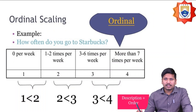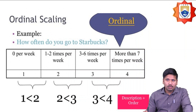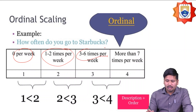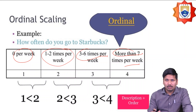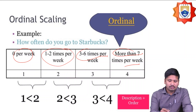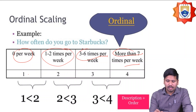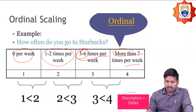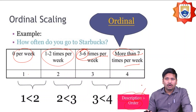Ordinal scaling example: how often do you go to Starbucks per week? Categories might be: zero times, one to two times per week, three to six times per week, and more than seven times per week. This involves description plus ordering — we are segregating responses into a particular order. This combination of description and ordering constitutes ordinal scaling.